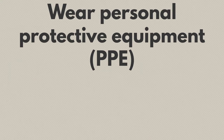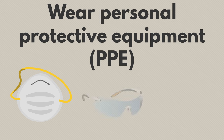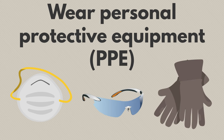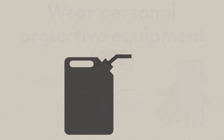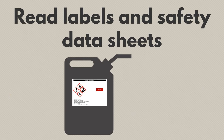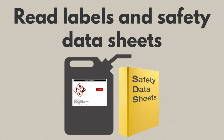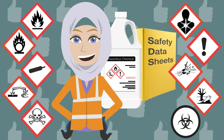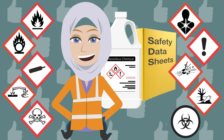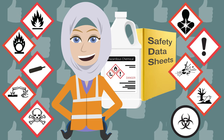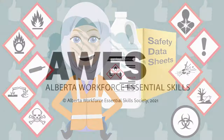Wear personal protective equipment, like masks, glasses, and gloves, when using hazardous products. Read labels and safety data sheets, and look for pictograms to know how to use hazardous products safely and what to do in an emergency. Stay safe at work with WHMIS.